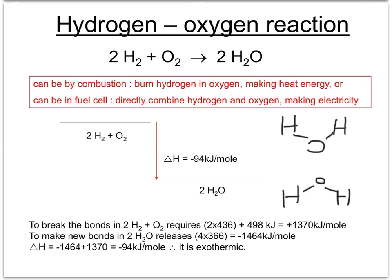When we compare those two values, we find that overall there is a release of energy. The release of energy overall is delta H, and 94 kJ of energy are released per mole of hydrogen and oxygen.